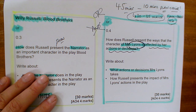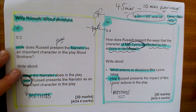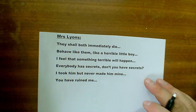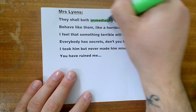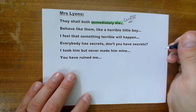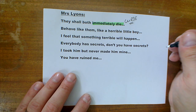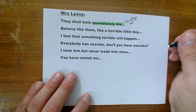You need to first think about: what does Mrs. Lyons do? Where do I see her? Who is she with? How does she speak? What does she say? And then — how, a very important word — Russell presents Mrs. Lyons, meaning Russell's methods. She says 'they shall both immediately die' — this is part of the curse she places upon the boys. Mrs. Johnston particularly believes in it, being a very superstitious and quite naive character, and Mrs. Lyons is very manipulative in spotting Mrs. Johnston's weaknesses and using that to control and get what she wants.